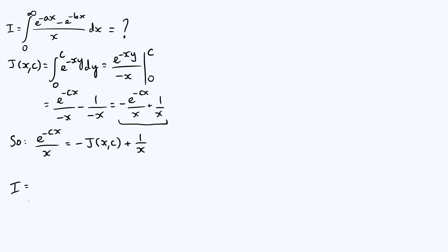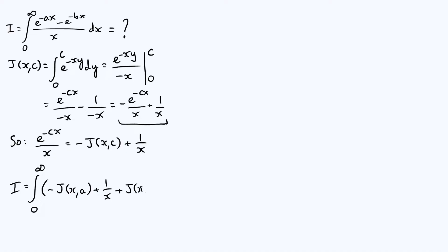So I is the integral from 0 to infinity of: the first part of the integrand, e^{-ax}/x, which using the J relationship becomes -J(x,a) + 1/x; and then the second part, -e^{-bx}/x, becomes +J(x,b) - 1/x, because we flip the signs since that part was subtracted. All of that is integrated with respect to x, and conveniently the 1/x terms cancel.